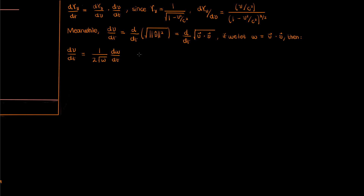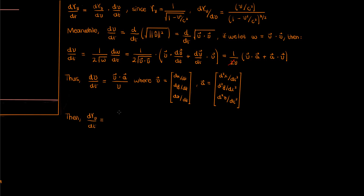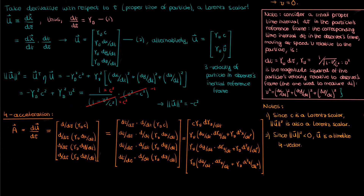If we let w equal the dot product of the three vector v with itself, then use the product rule to evaluate dw/dt and plug back in, the term in the denominator is just v, while the t-derivative of the three vector v is the three acceleration, which I'll call small a with an arrow. Since the dot product is commutative, the two terms inside the parentheses are the same, and we can simplify to get dv/dt in terms of the three vectors v and a. Plugging this in, the t-derivative of gamma simplifies, recognizing that the 3/2 power term represents gamma cubed.